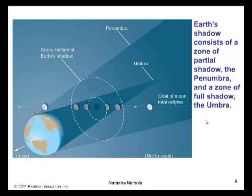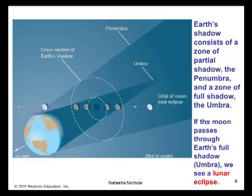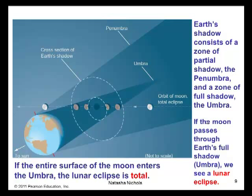Here's a more complete picture. Again, not to scale. Remember, the Earth's shadow consists of the partial shadow zone, that is called the penumbra, and the full shadow zone, that is called the umbra. If the Moon passes through the Earth's full shadow, the umbra, then we see a lunar eclipse. And if the entire surface of the Moon enters this umbra, then the lunar eclipse is total.